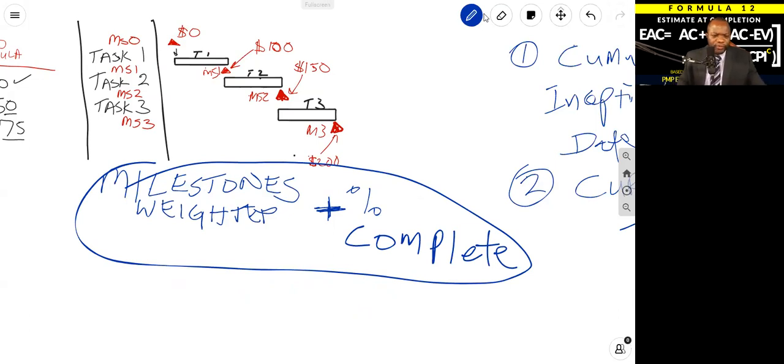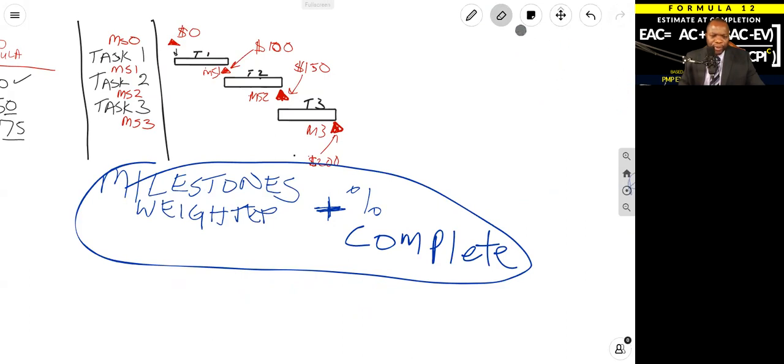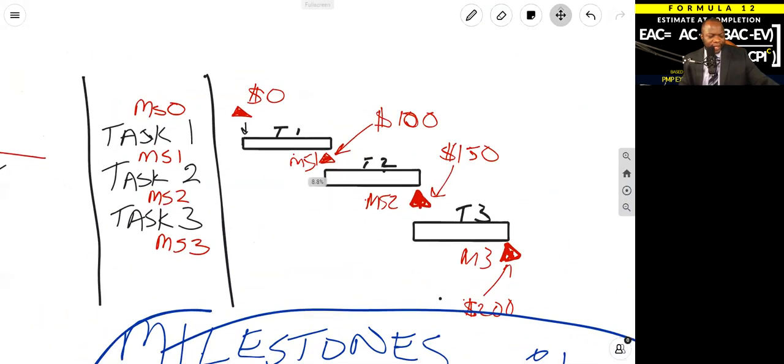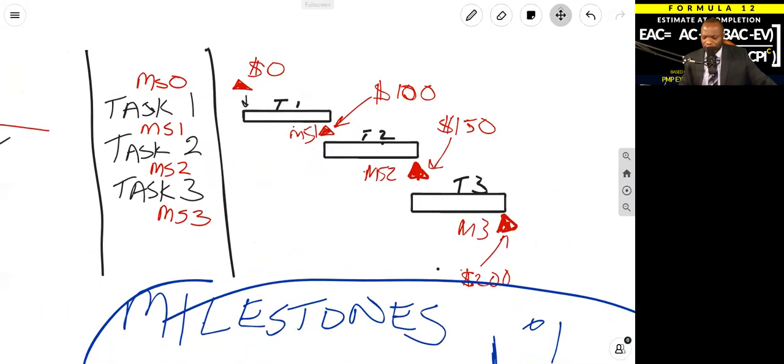All right. So what is the difference between number two and this, number three? Well, the major difference here, my friends, is that we are going to be allowing for partial claim of earned value for some of these milestones.